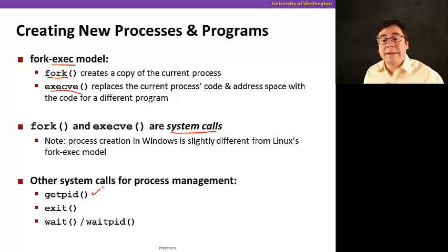And there are other system calls to do process management. For example, there's getpid, which returns an ID of the current process that's calling the system call. There's exit, which just kills and ends a process. And there's wait and waitpid, which is used to synchronize processes running.